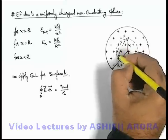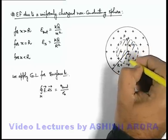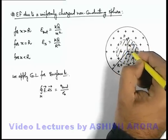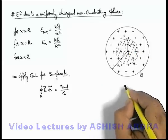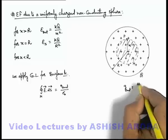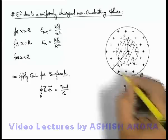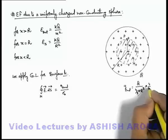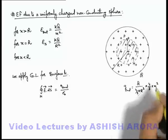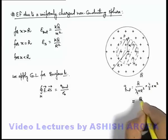So if we wish to find out the charge enclosed within this spherical region, that can be obtained simply as q enclosed will be capital Q by 4 by 3 pi R cube, that is the total volume of sphere, multiplied by 4 by 3 pi x cube. So this can be written as Q x cube by R cube.